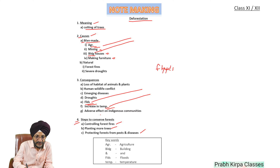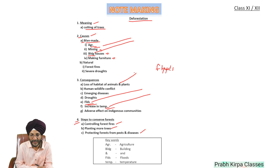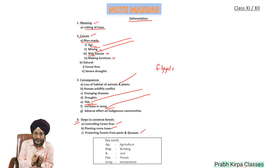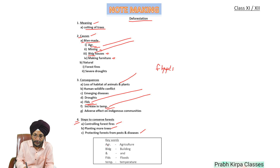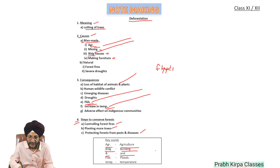And here it has also been used for AND. For all these words we have made a box and mentioned the keywords used in this note-making. AGR stands for agriculture, BLDG stands for building, the symbol stands for AND, FLDS stands for floods, and TEMP stands for temperature.